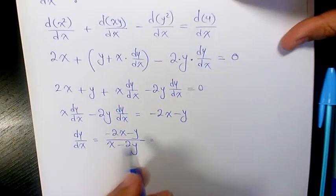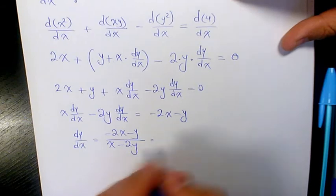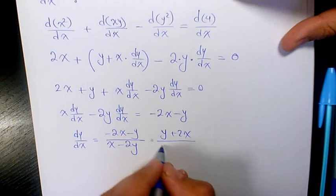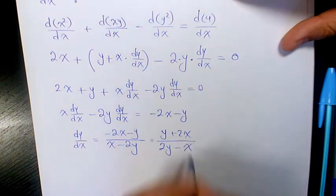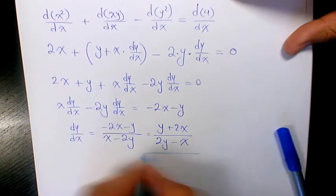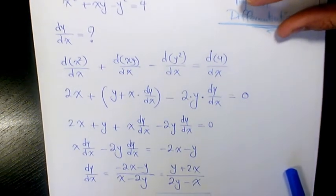If I factor out the negative from the numerator and denominator and cancel, it becomes (y + 2x)/(2y - x). So that's the derivative of this function. I hope you enjoyed this video.